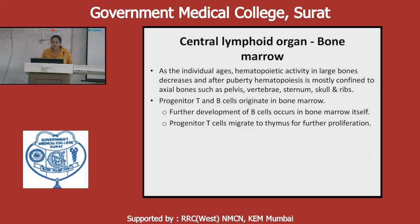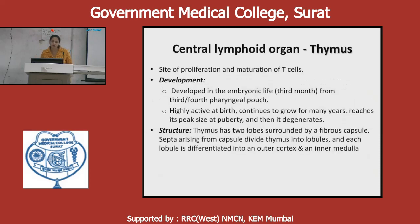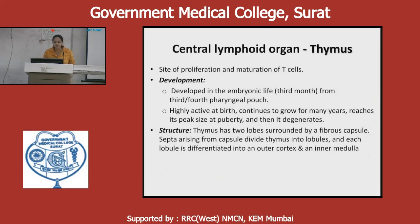Progenitor T and B cells originate in bone marrow. T cells then migrate to the thymus, while B cells stay in the bone marrow itself. The second central lymphoid organ is the thymus — it is a site of proliferation and maturation of T cells. It develops in embryonic life from the third or fourth pharyngeal pouch, is active at birth, continues to grow for many years, reaches its peak size at puberty, and then degenerates.